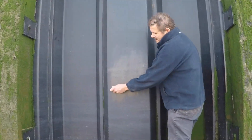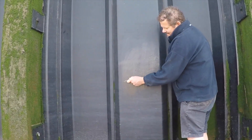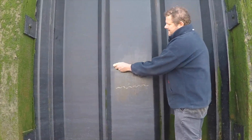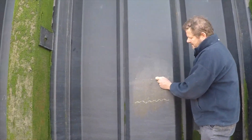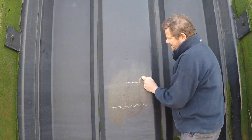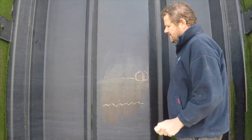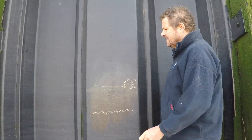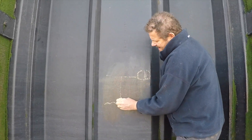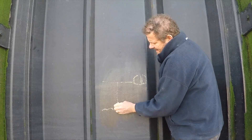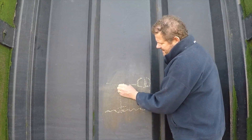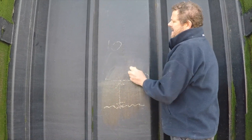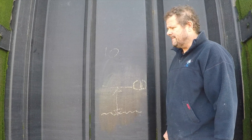Tidal heights are measured — here's the sea bed — from what's called chart datum. It's measured from a very low tide, so when we look at the chart, this depth here, if that was 10 metres, it'd be written on the chart as 10 metres.